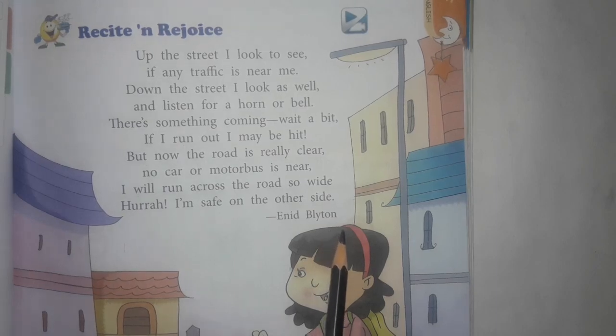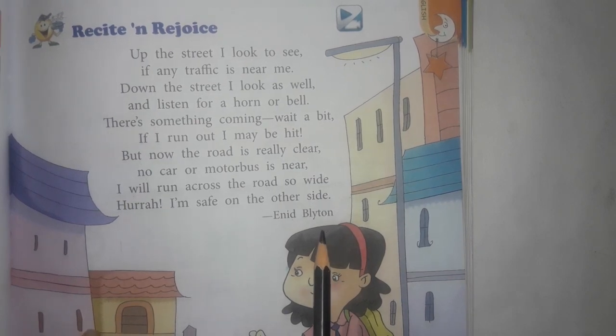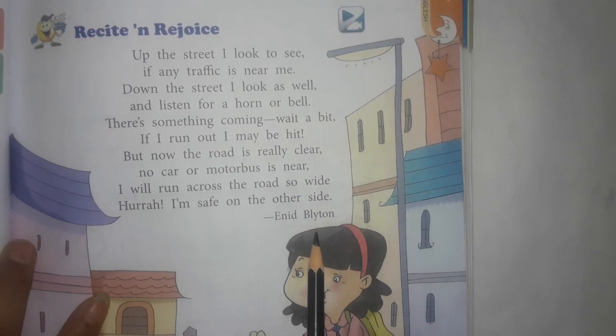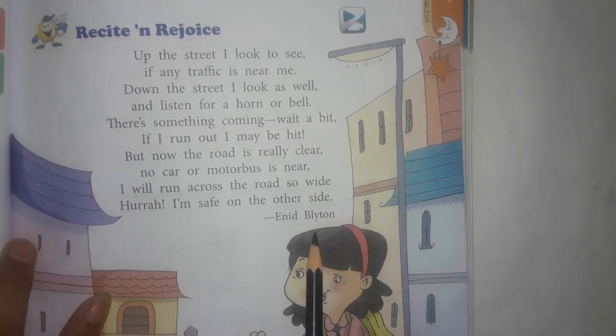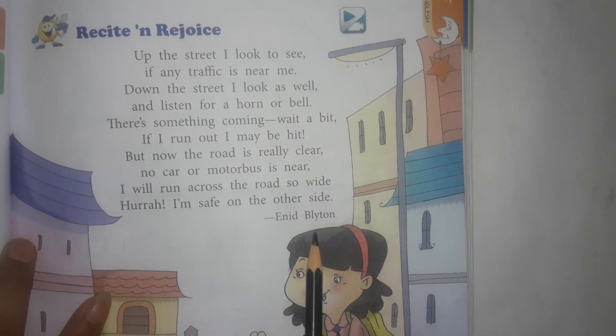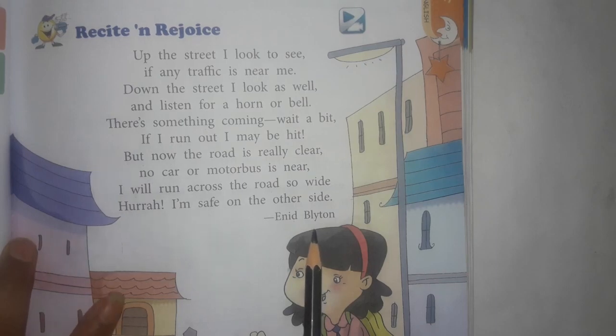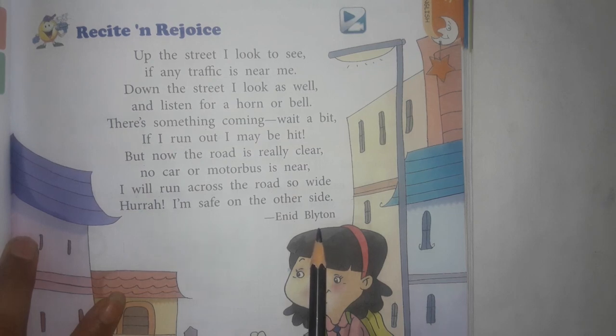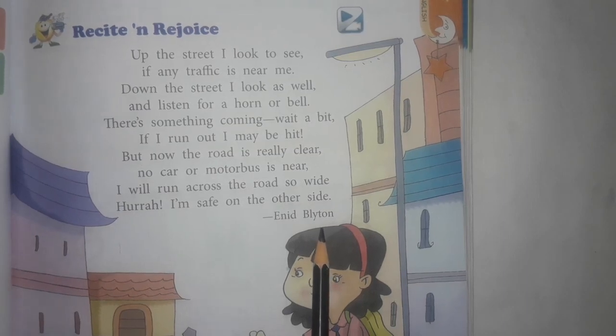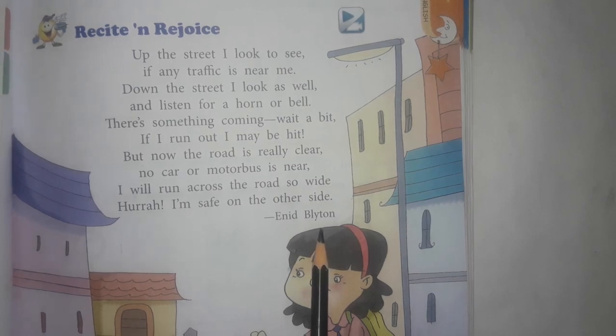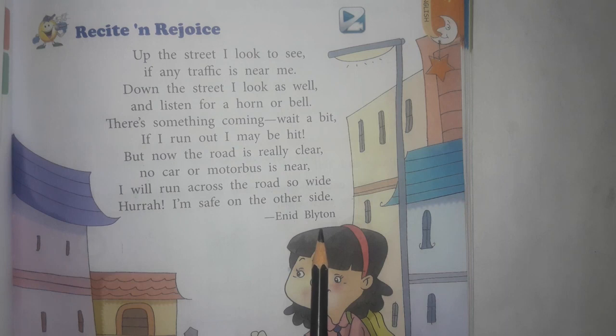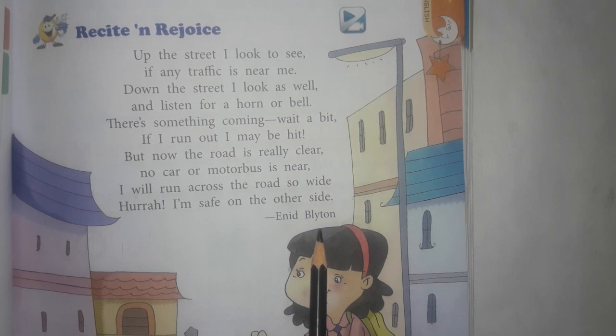Now, before explaining, I am telling a few safety tips or measures. You should walk on the left side. You should not run on the road. You should cross the road with any elder. And you should take care while crossing. First, you have to look on both sides, your right and your left, and then you cross the road.